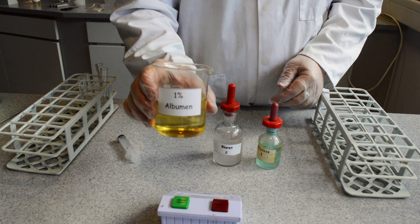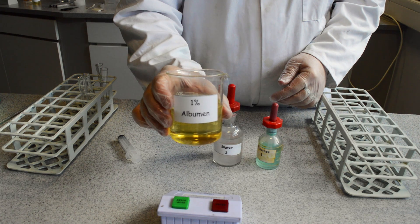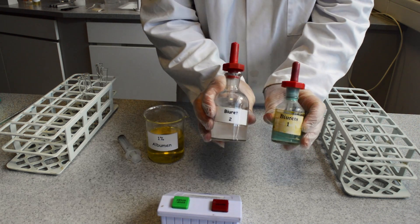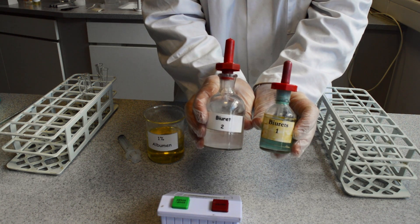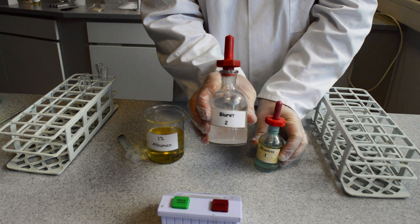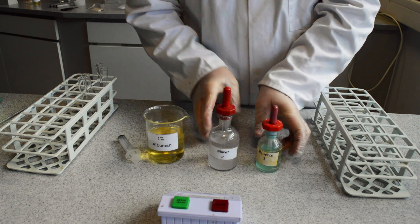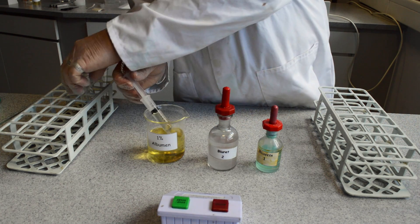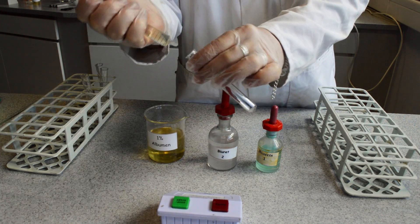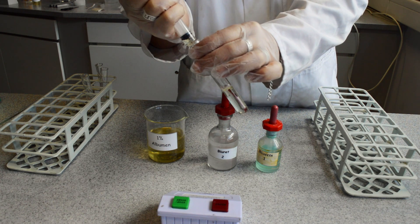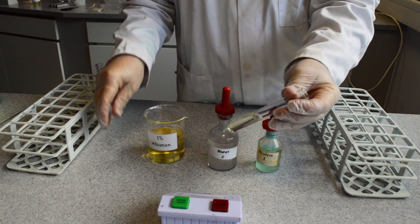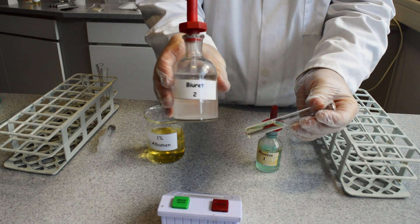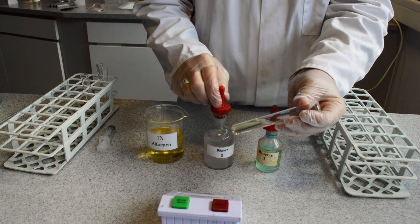Testing for albumin or protein uses two different reagents. Biuret 1 and Biuret 2. Biuret 2 is dilute sodium hydroxide. It is an alkali. Take about 5 ml of your protein or albumin sample and place into a test tube. Then add several drops of the Biuret 2 reagent.